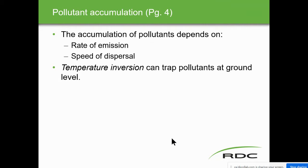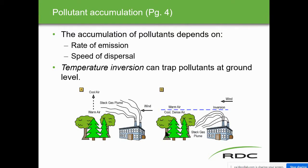Temperature inversions can trap pollutants at ground level. A temperature inversion is when the atmosphere is warmer than the ground temperature, so it holds in all the pollutants. You can see on page four: warm air above and cool, dense air below pushes everything down onto the ground, so you don't get dispersal. Normally, warm air is on the ground and cool air is above us, and pollutants go up. But during an inversion, they're held right close, and stack emissions almost stay at ground level.